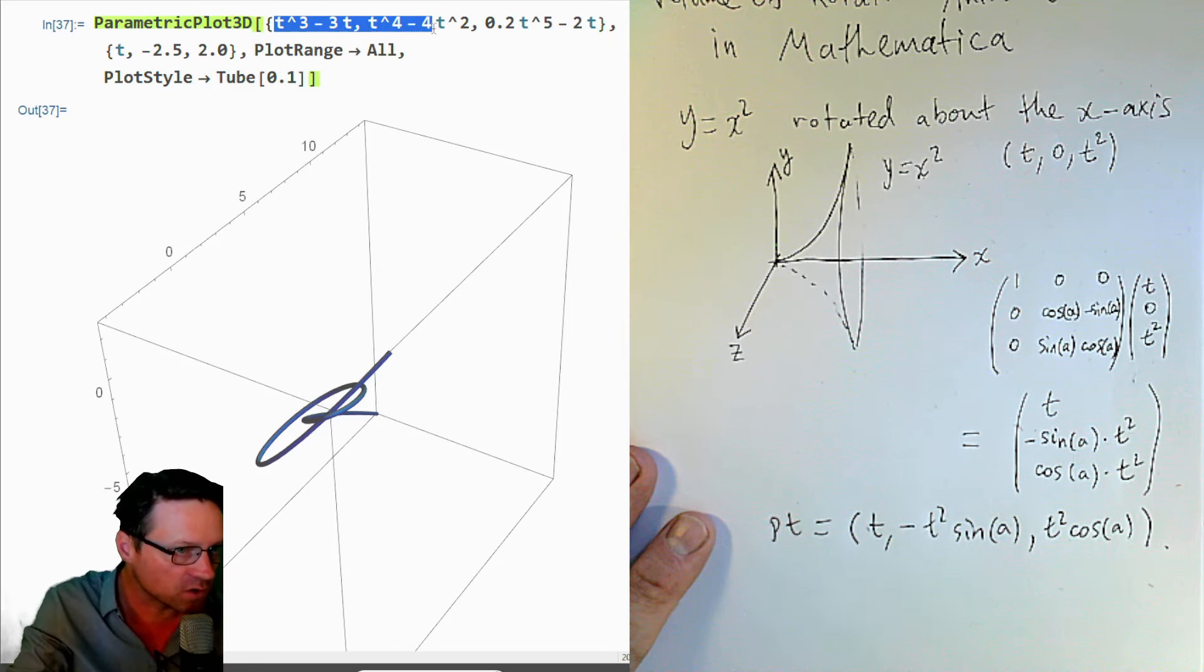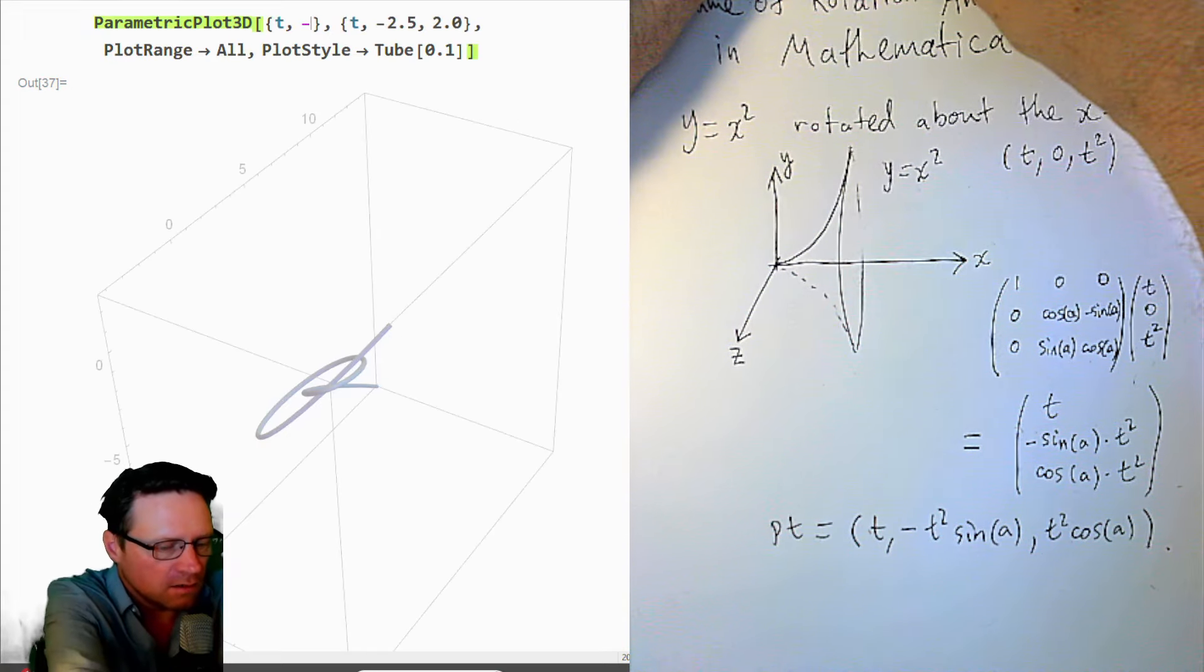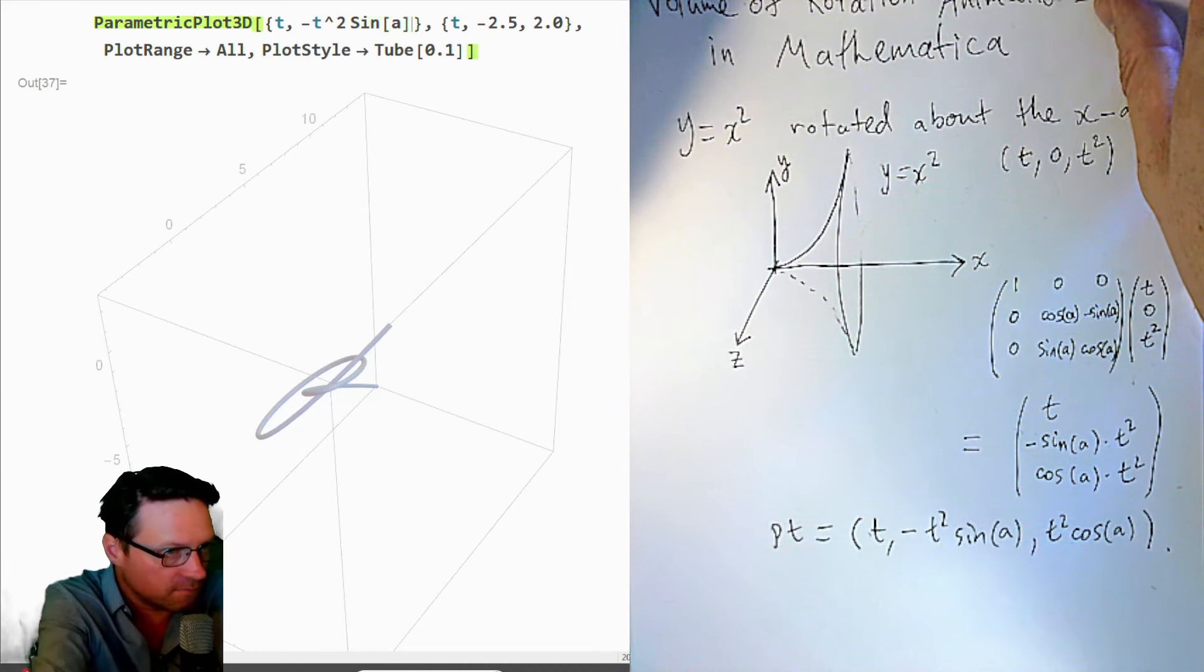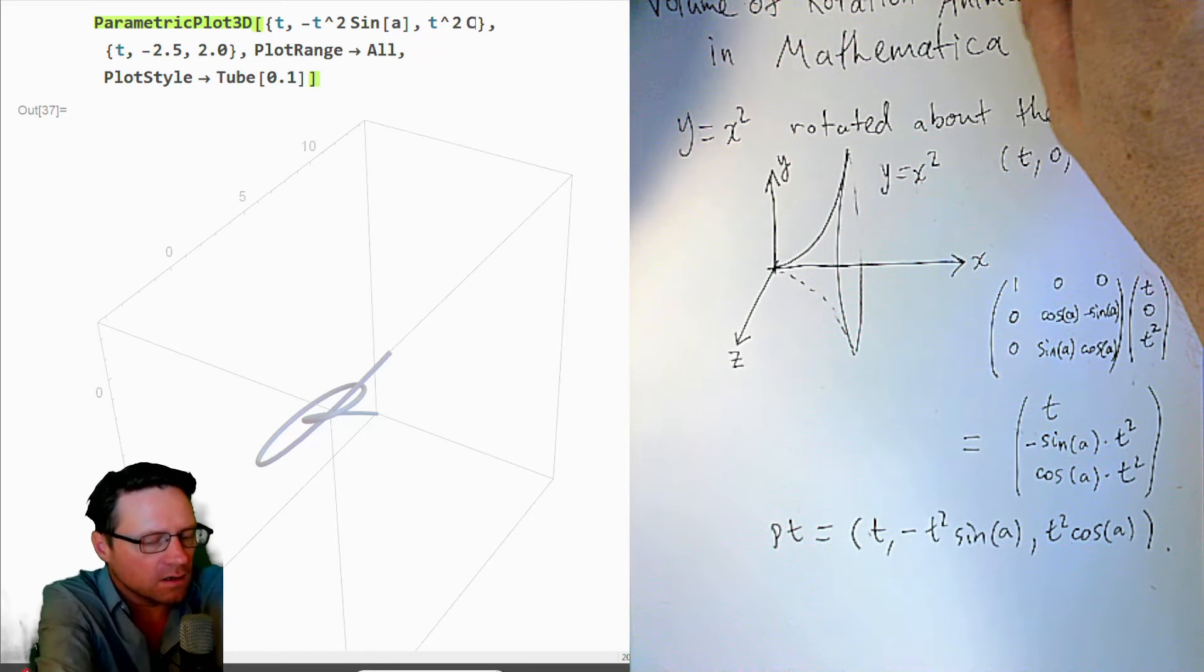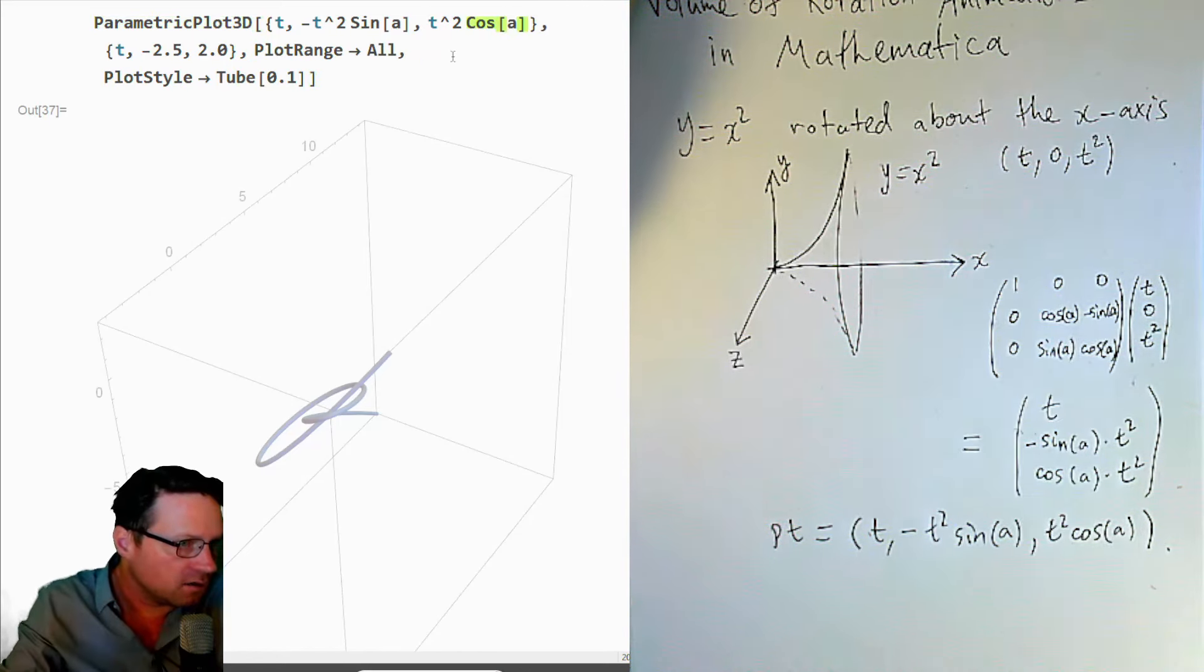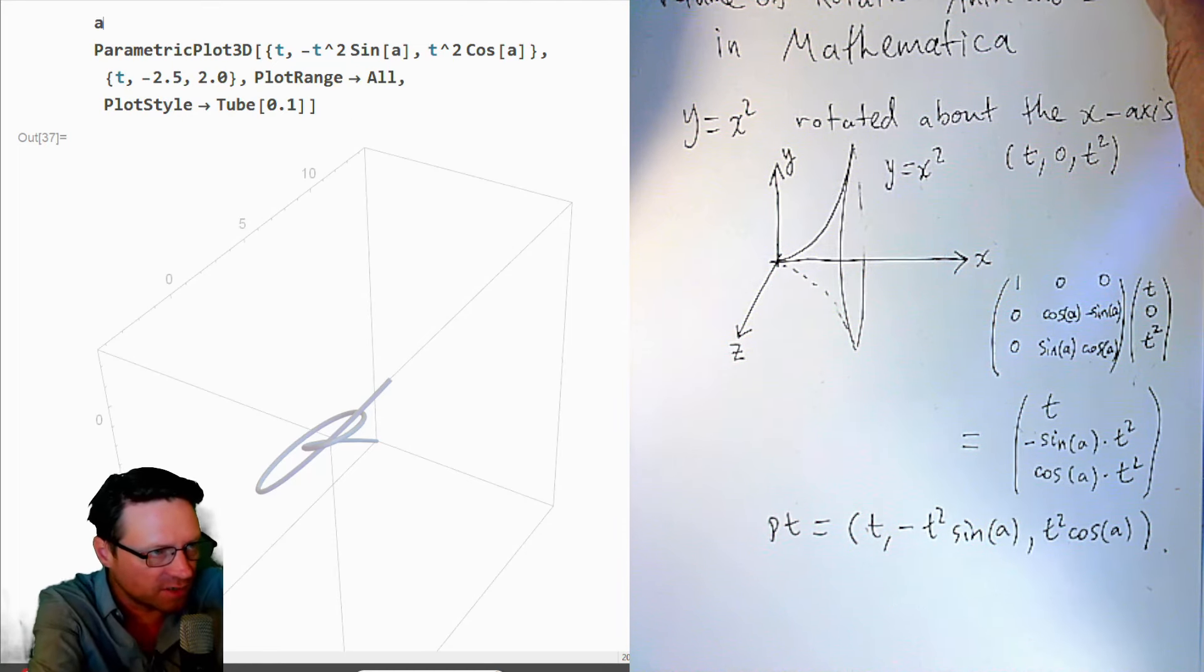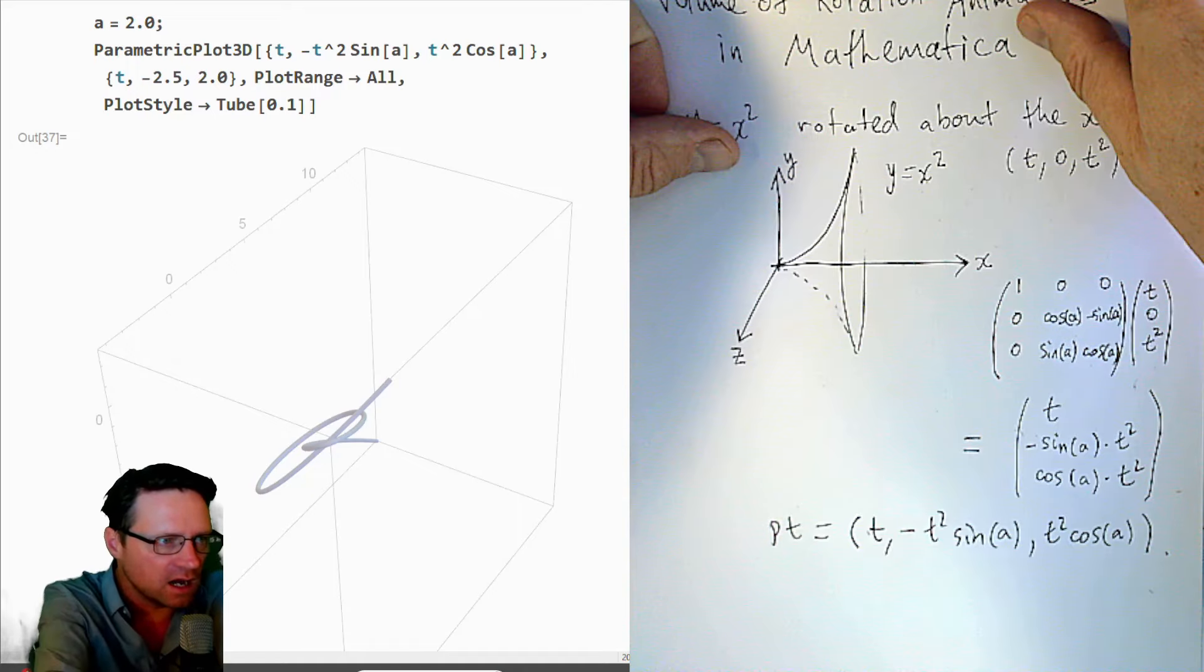I'm going to replace these coordinates here with what we've written down, so t, minus t squared, t squared sine of A and t squared cosine of A. But I need A to be given outside. So let's do that above that parametric plot. Let's just give A a value. A is 2.0. Now let's try that.